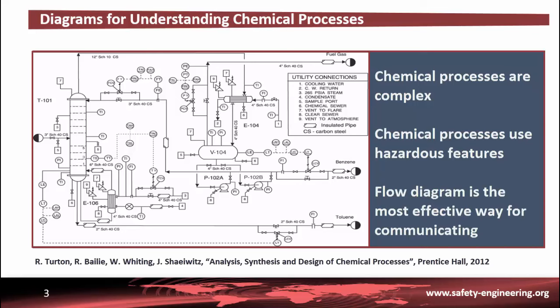Visual information is the clearest way to present materials and is least likely to be misinterpreted. For these reasons, it is essential that chemical engineers be able to formulate appropriate process diagrams and be skilled at analyzing and interpreting diagrams prepared by others.